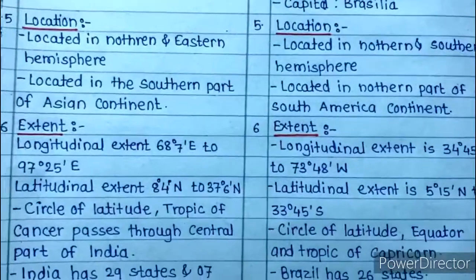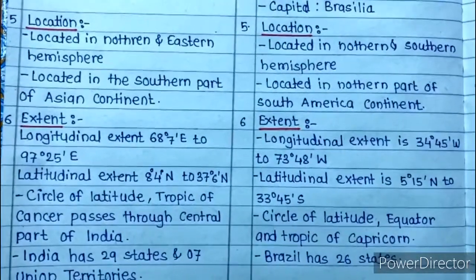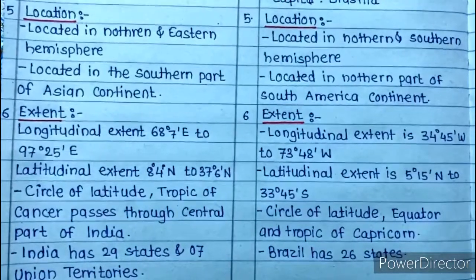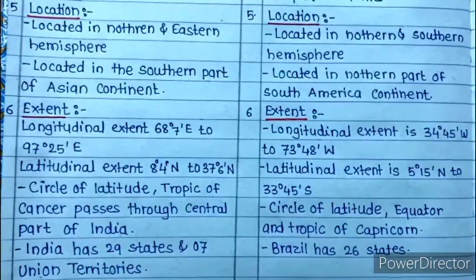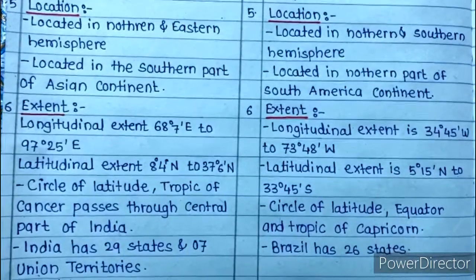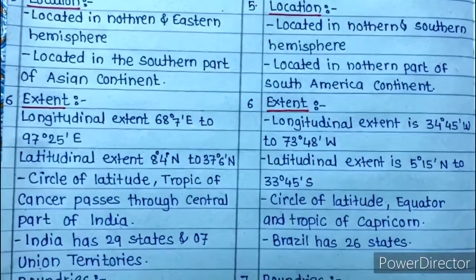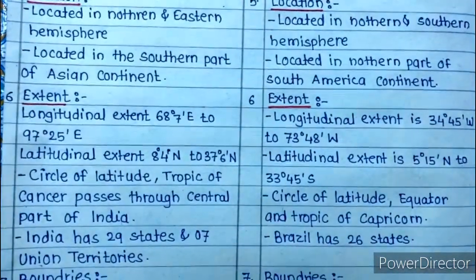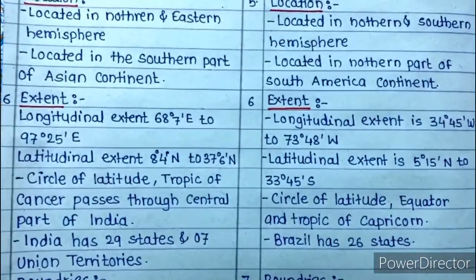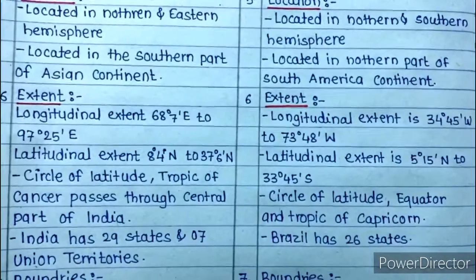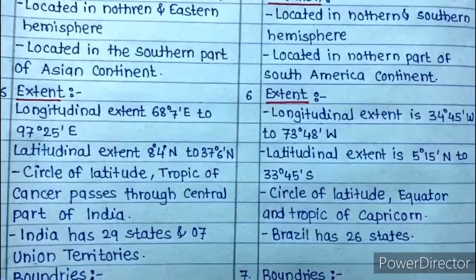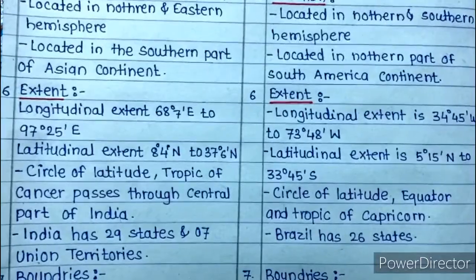Next is location. India is located in the northern and eastern hemisphere, whereas Brazil is located in the northern and southern hemisphere. India is located in the southern part of the Asian continent, and Brazil is located in the northern part of the South American continent.